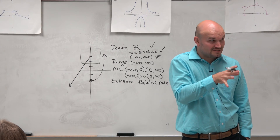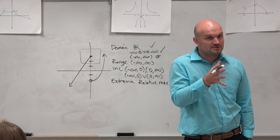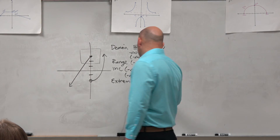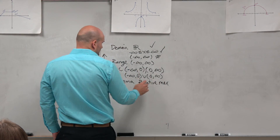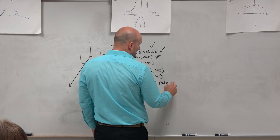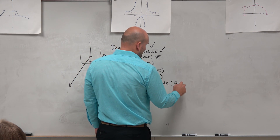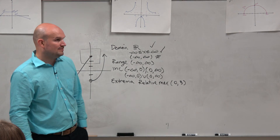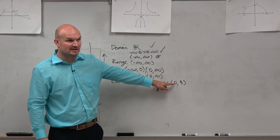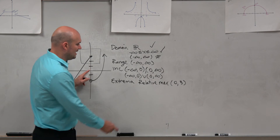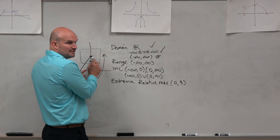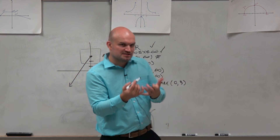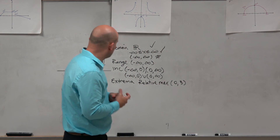Or you could say there is a relative maximum value of y equals 3. I want you guys to understand the difference between the where and the of. On tests and quizzes you'll be asked one or the other. A lot of times we could just write a maximum value as the coordinate point 0 comma 3 — that takes care of both the where and the what. Just be aware of the question, and I'll leave this as a coordinate point.